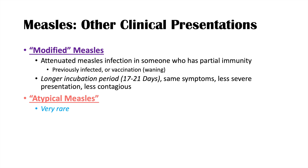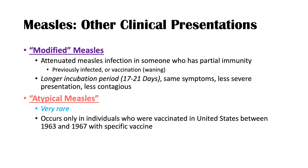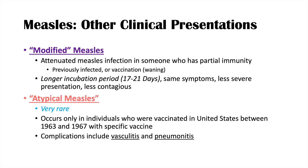The second clinical presentation is atypical measles, which is very rare. It only occurs in individuals vaccinated in the United States between 1963 and 1967 with a specific vaccine. If these individuals get infected with measles without any other vaccinations, they can actually have a worse presentation with complications including vasculitis and pneumonitis. If you want to learn more about complications of measles and how to diagnose, treat, and prevent measles infection, please check out my second lesson on measles.